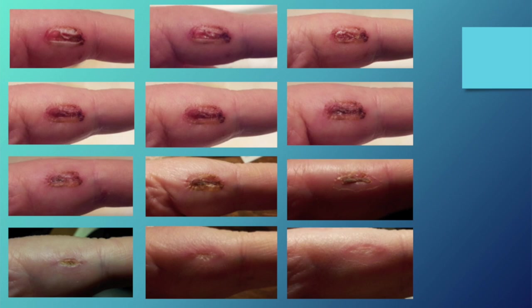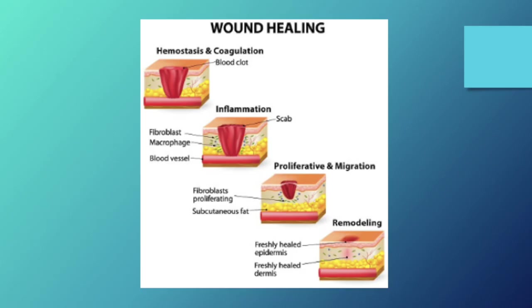Wound healing is a complex and dynamic process that involves interactions between different cells and molecules. Normal wound healing consists of four distinct stages: hemostasis, inflammation, proliferation, and remodeling.